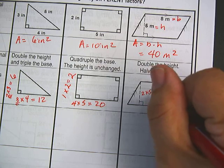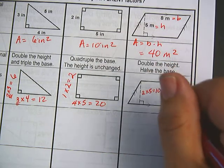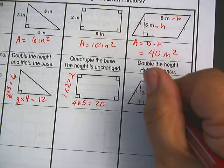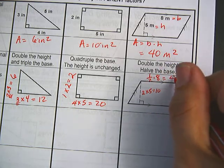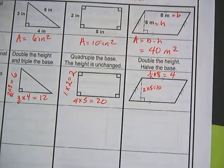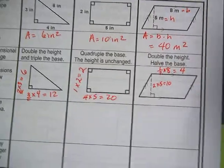I'm going to double the height. 2 times 5 is 10. And I'm going to halve the base. The best way to think of that is 1 half times 8, which is 4. Half of 8 is 4.